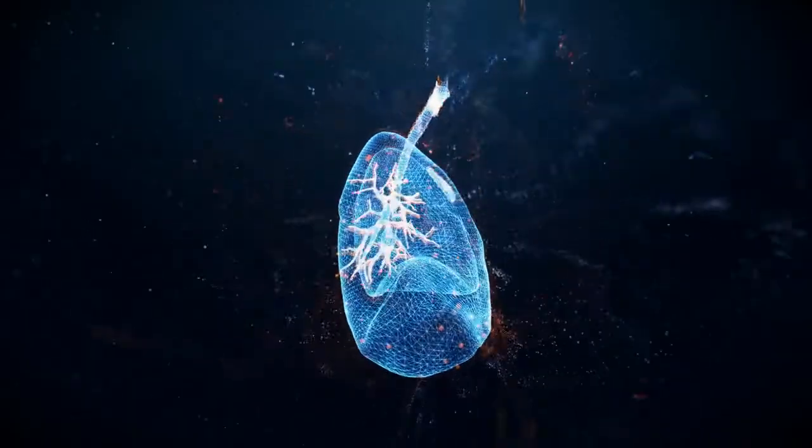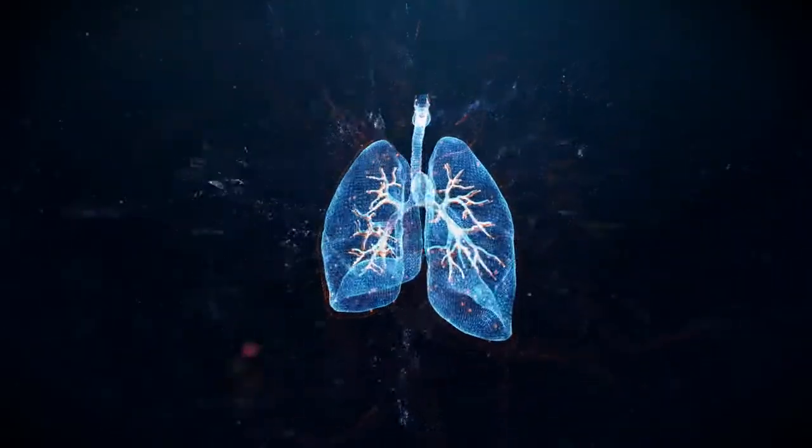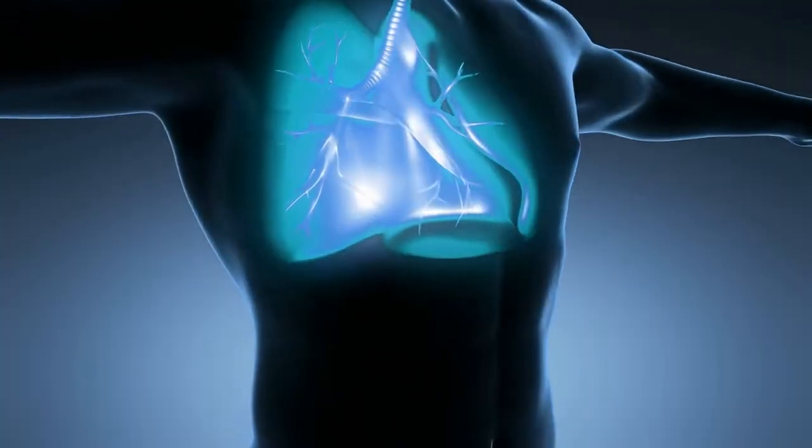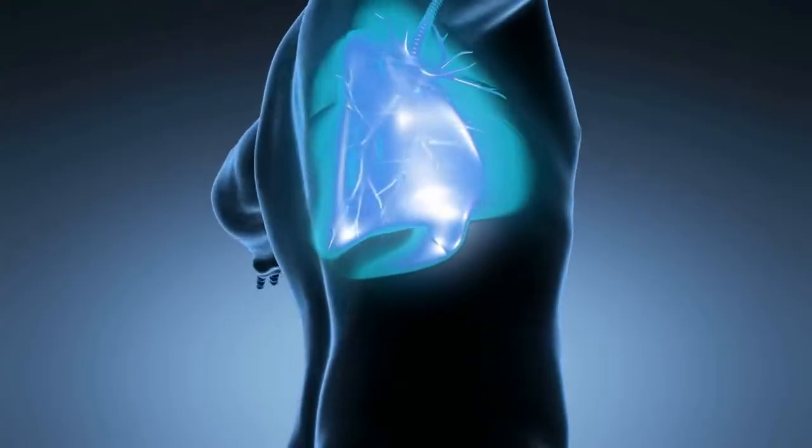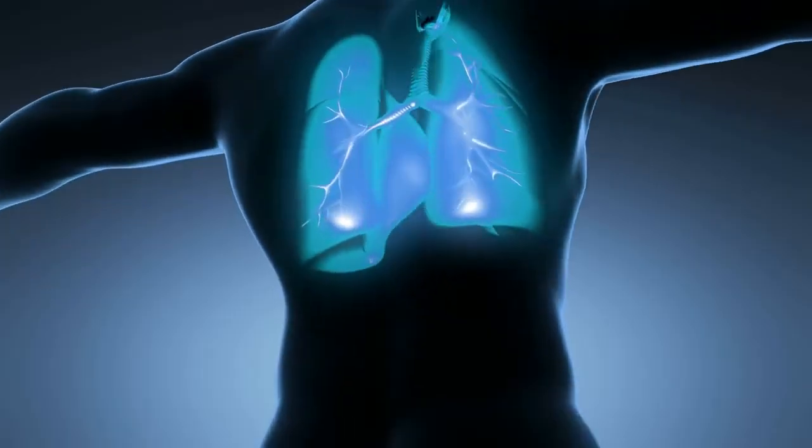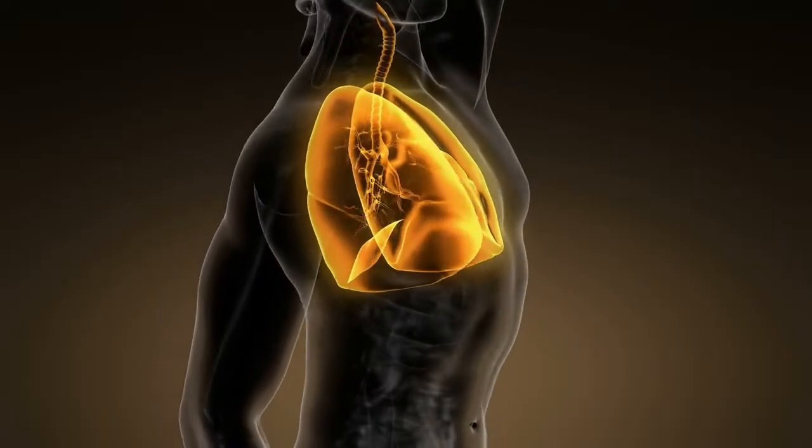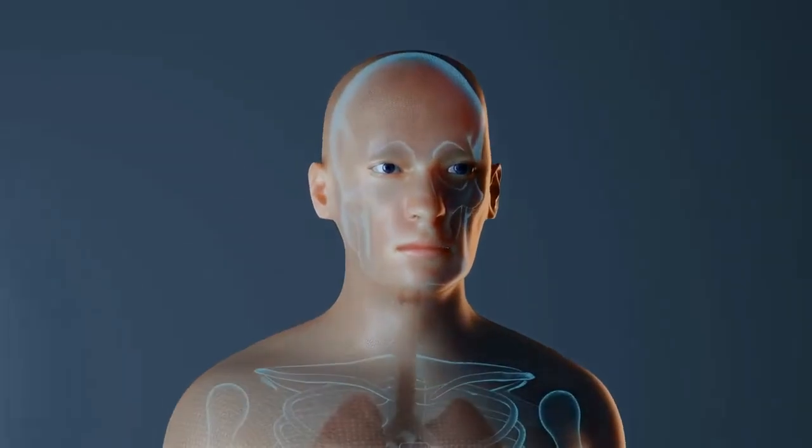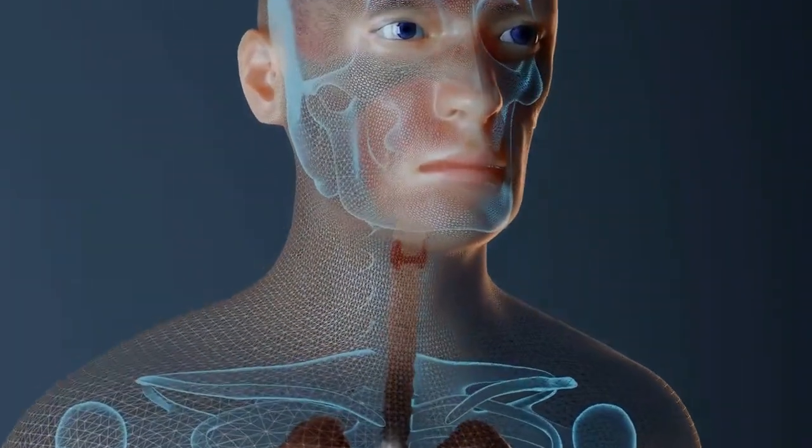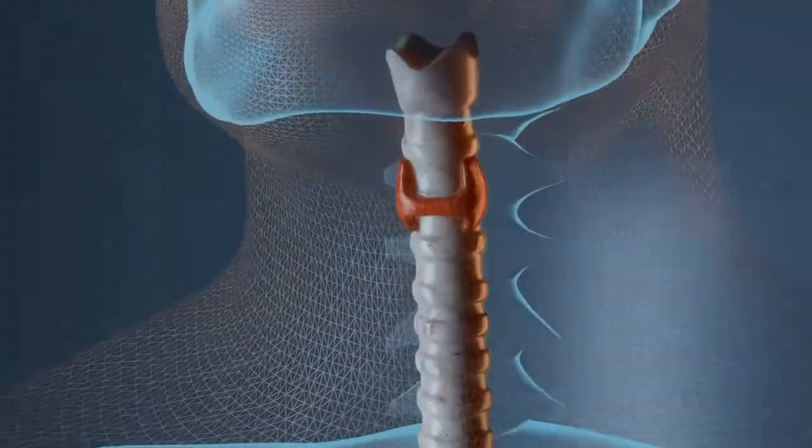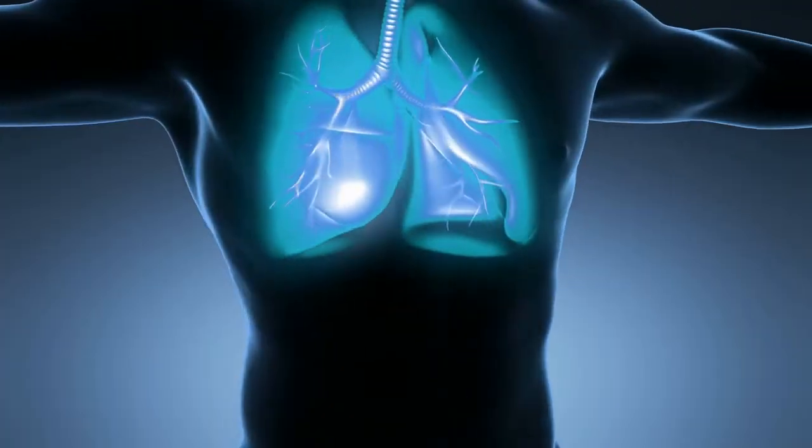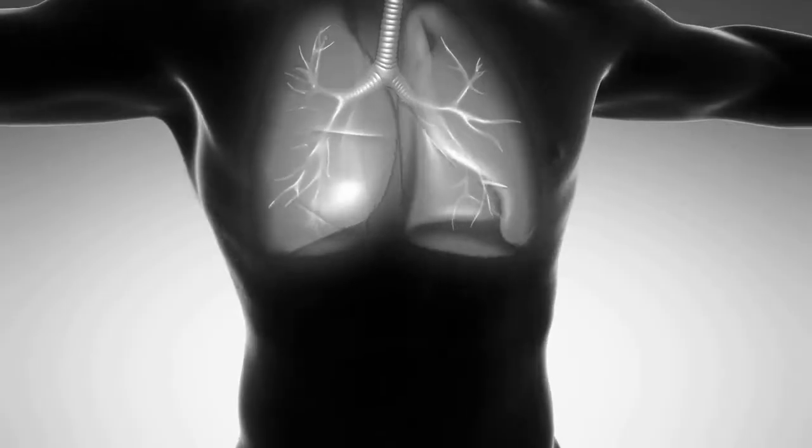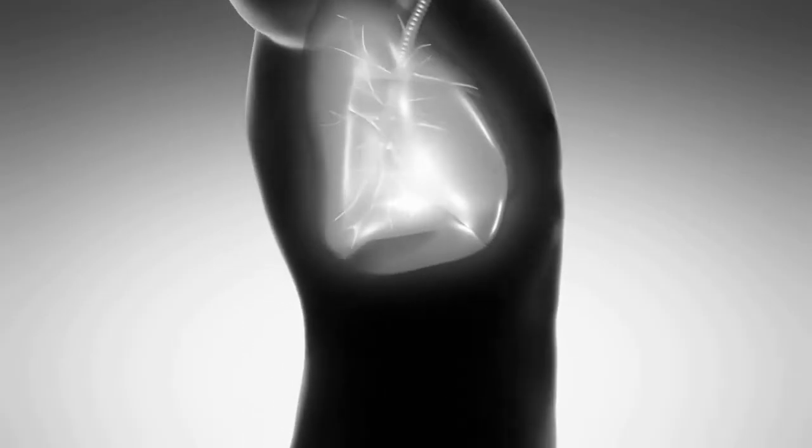Next, we have the respiratory system, which is responsible for taking in oxygen and expelling carbon dioxide. The lungs are the primary organ of the respiratory system, and they work together with the trachea, bronchi, and alveoli to ensure that our body receives the oxygen it needs.